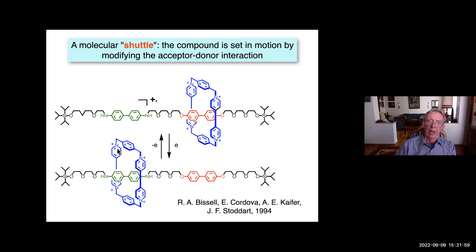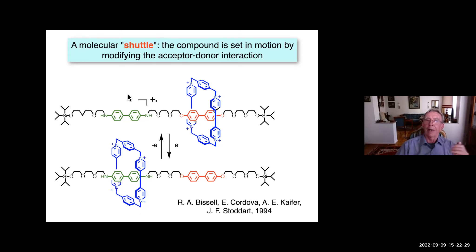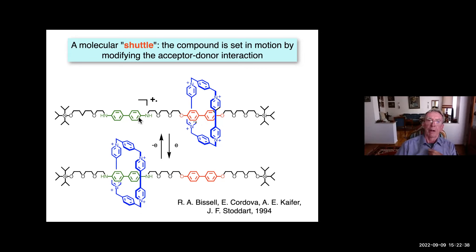The blue box interacts strongly with the strong electron donor green station. Now you set a signal: you oxidize the green station, generating a radical cation which has no interest in interacting with the blue ring. So the blue ring is repelled and moves to the right, interacting with the weak electron donor. It can go back if you reduce the radical cation back to the neutral form of the diamine.